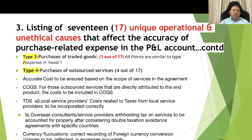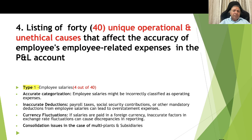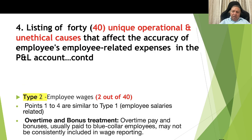Type 3, purchase of traded goods, is similar to Type 1, so not repeated. Type 4, purchase of outsourced services: there are 4 causes. One is ensuring accurate cost based on the scope of services in the agreement. Cost of outsourced services directly attributed to the end product to be included in cost of goods sold, for example job work. TDS: taxes from the local service provider to be incorporated correctly; for overseas consultants, withholding tax on services to be accounted for properly after considering double taxation avoidance agreements in specific countries. Currency fluctuation: correct recording of foreign currency conversion charges to be reflected accurately. That makes 17 causes.